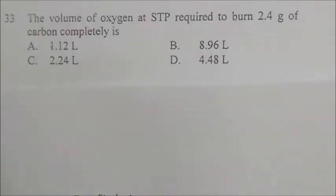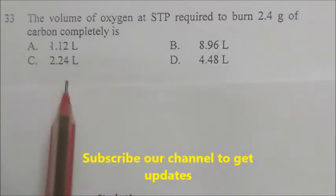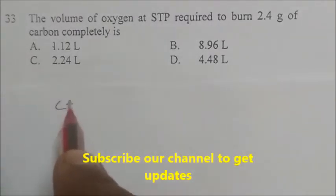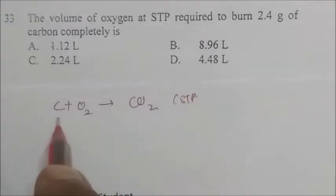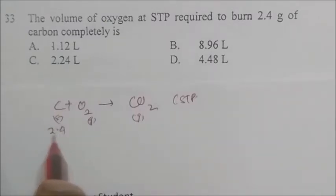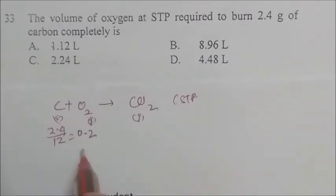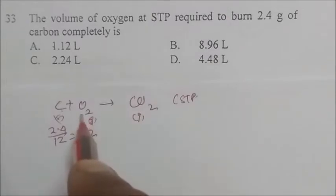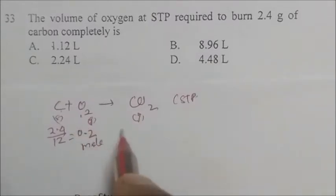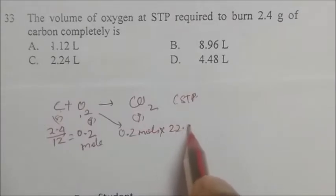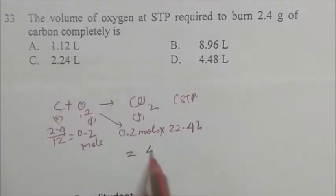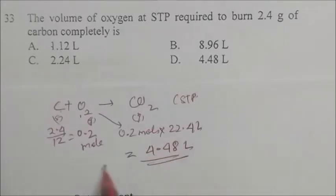The next question asks for the volume of oxygen at STP required to burn 2.4 grams of carbon completely. The equation is C + O2 → CO2. Here 2.4 grams of carbon equals 0.2 moles. Since the mole ratio of C to O2 is 1:1, we need 0.2 moles of O2. At STP, 1 mole = 22.4 liters, so 0.2 moles × 22.4 = 4.48 liters, approximately 4.4 liters. The answer is D.